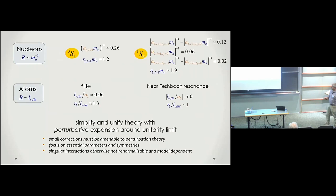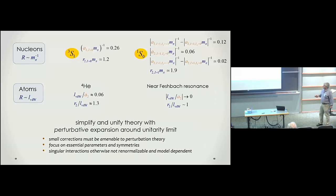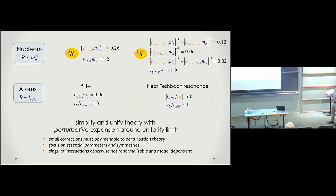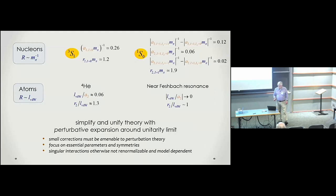I want to talk about the possibility of doing a perturbative expansion around this unitary limit — perturbatively close in a specific sense. Why insist on perturbative? First, if corrections are truly small they should be amenable to perturbation theory, allowing us to focus at leading order on the essential parameters and symmetries. There is also an extra difficulty: because we have singular interactions, it is in general not possible to renormalize the theory if we don't treat the more singular correction interactions in perturbation theory. So I want to see to which extent we can develop a perturbative expansion around the unitary limit.